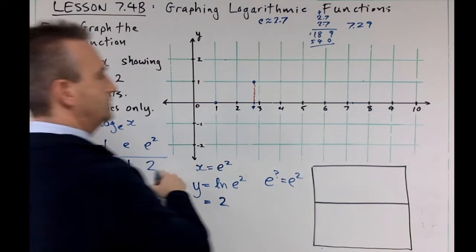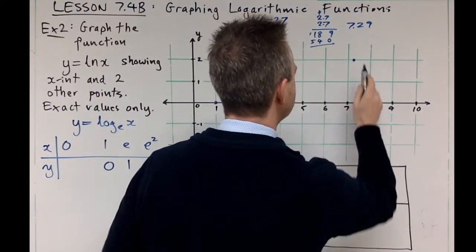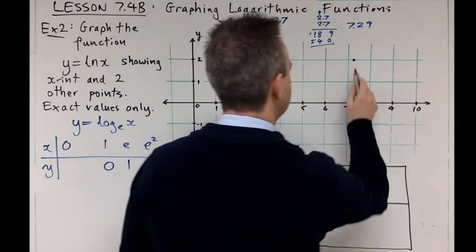So that's about 7.29, about here I guess, and we go up to 2. It looks like e squared is about there, I'll just put the dot in again.